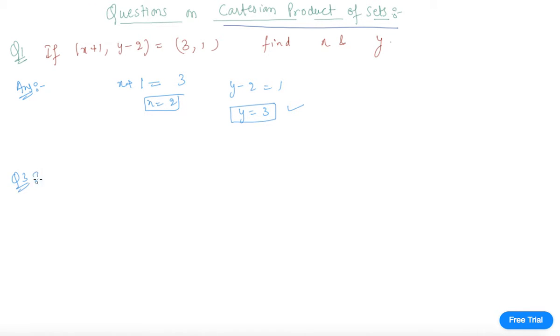Now let us discuss a good question. Let A = {1, 2, 3} and B = {3, 4}. There are three elements in A and two elements in B. There is one more set C = {4, 5, 6}.